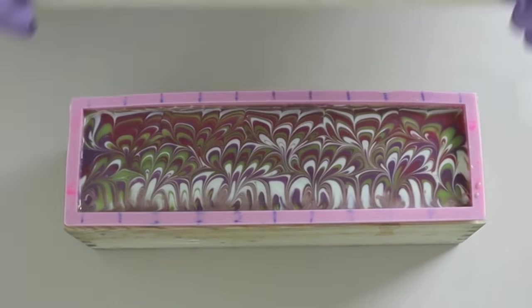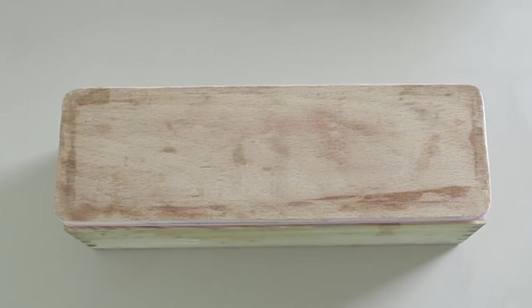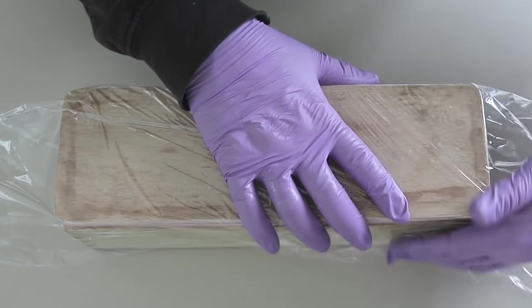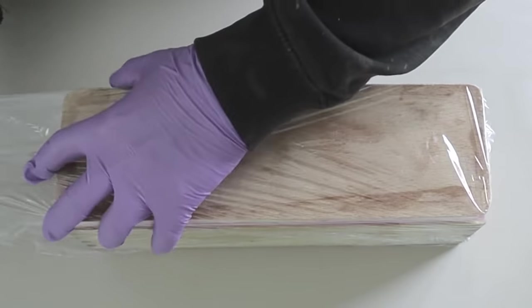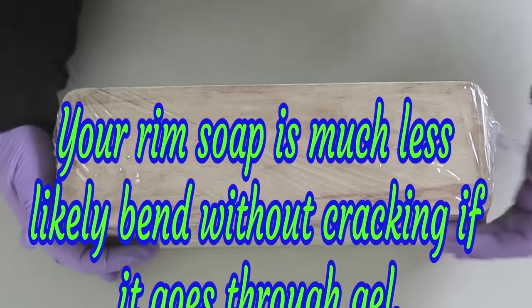And then as normal I'll cover it up and wrap it and pop it in the oven at 170 degrees Fahrenheit, 75 degrees Celsius, turn the oven off as soon as the loaf goes in there and leave it to sit overnight.